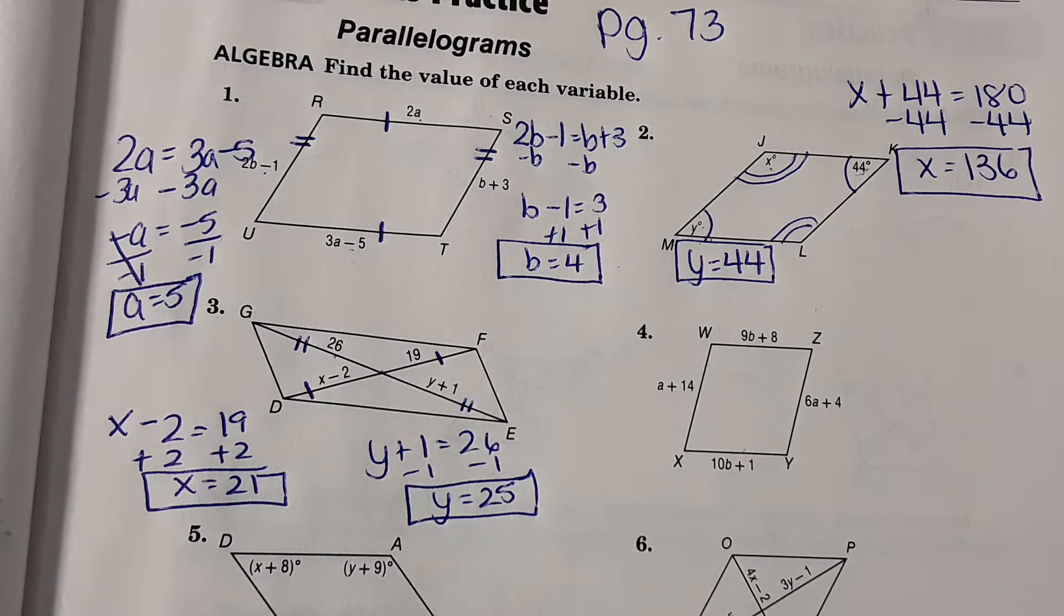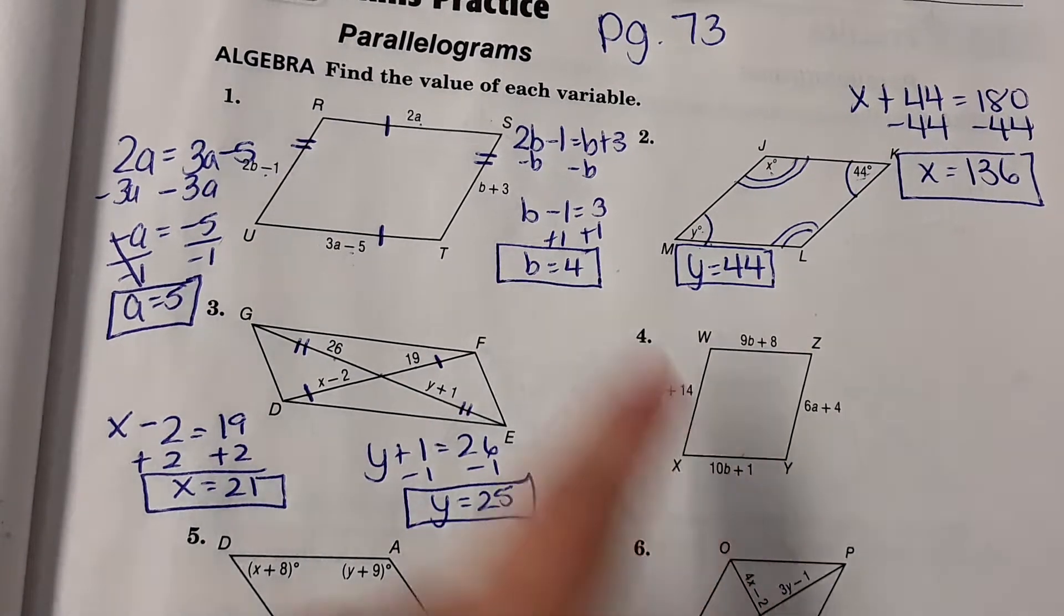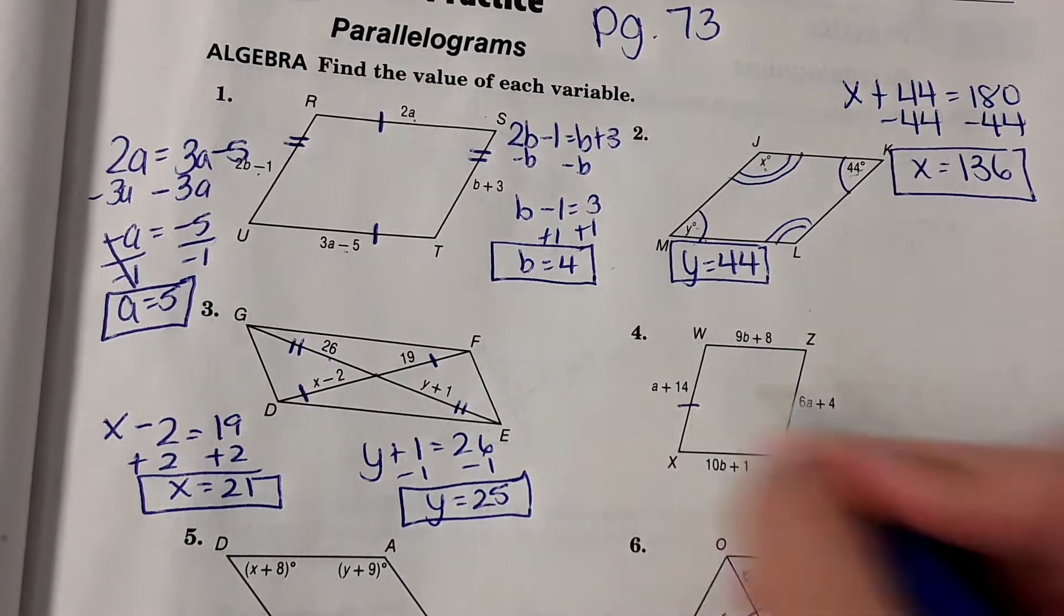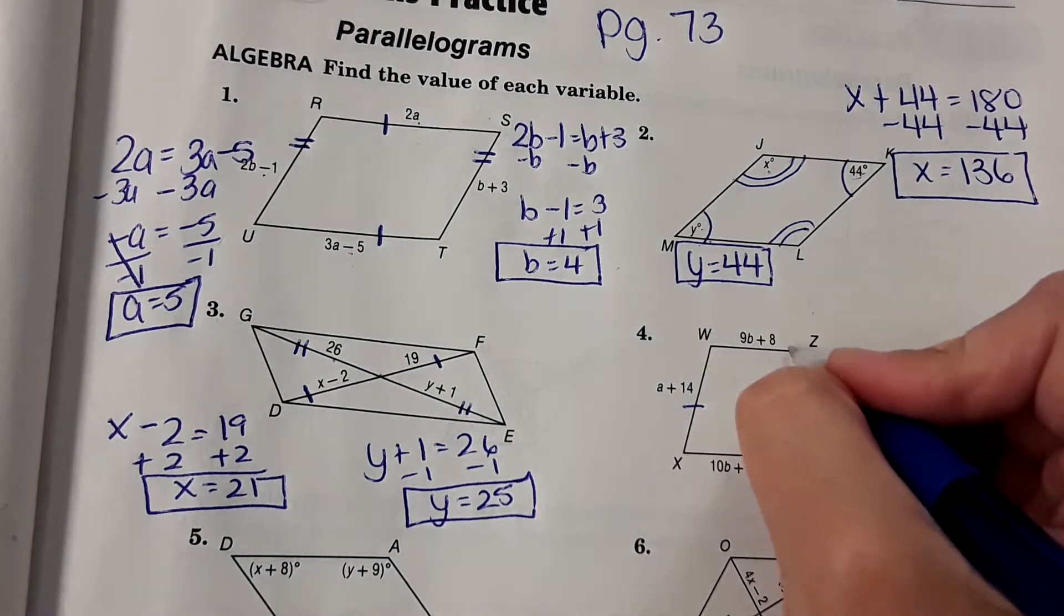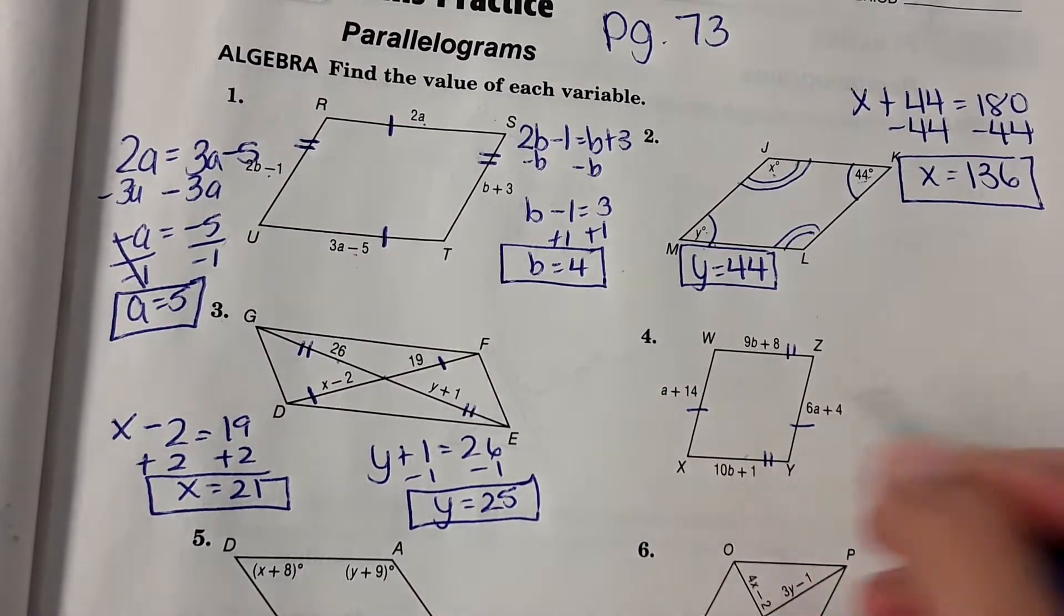Number four is just like number one, so I'm not going to go over that one. But you would set these equal to solve for a and set these equal to solve for b.